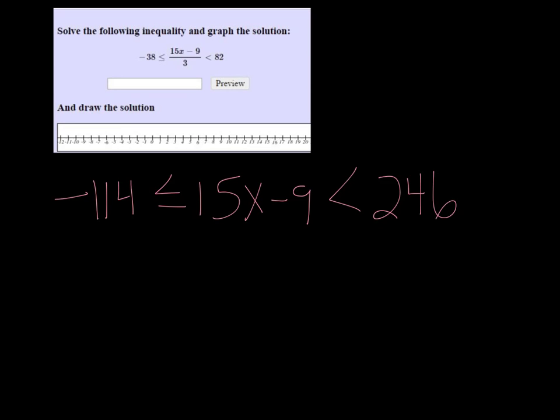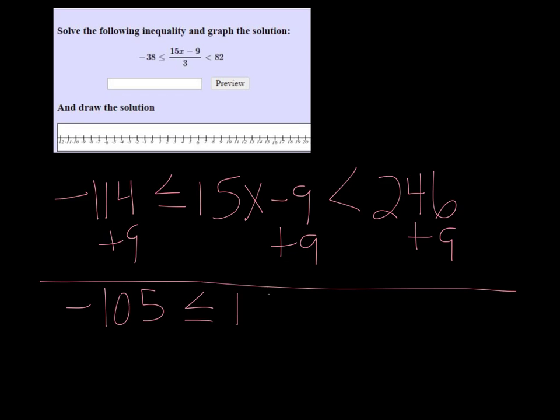From here, I'm trying to get x by itself, so I'm going to add 9 to all 3 parts. So negative 114 plus 9 is negative 105, which is less than or equal to 15x. And then 246 plus 9 is 255.